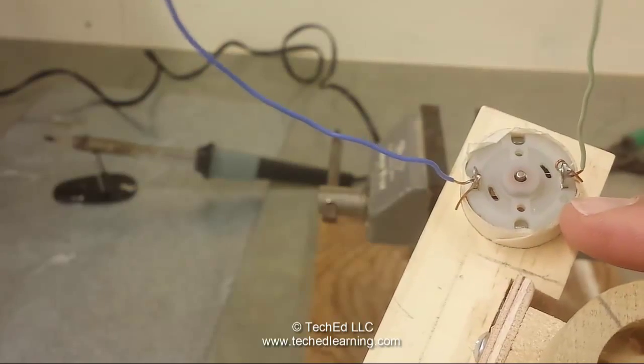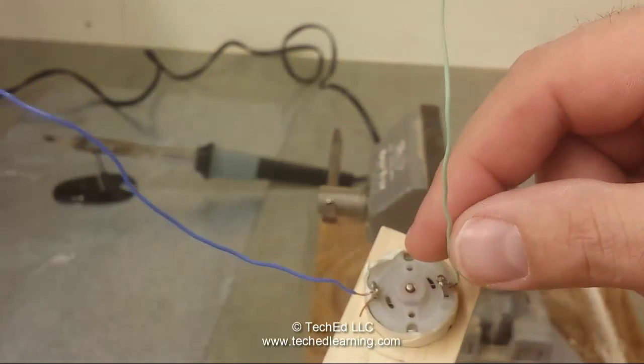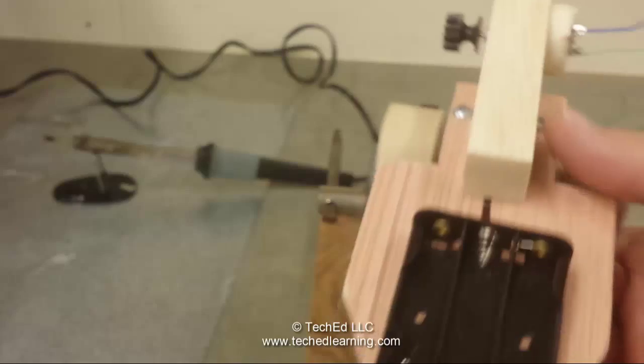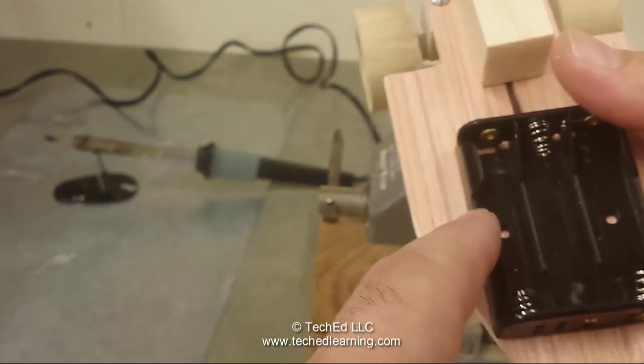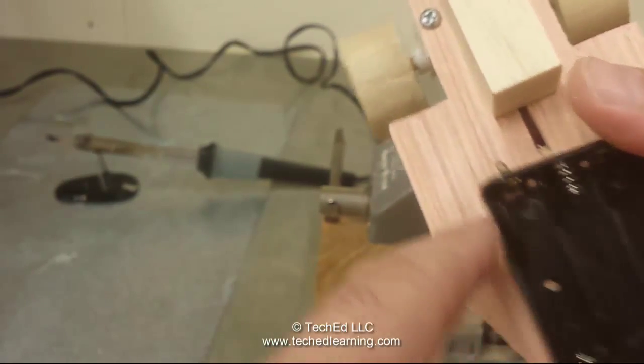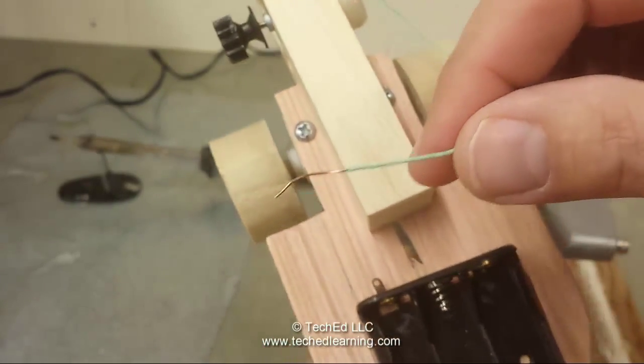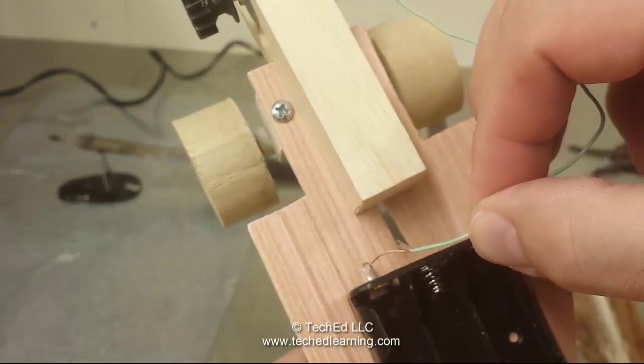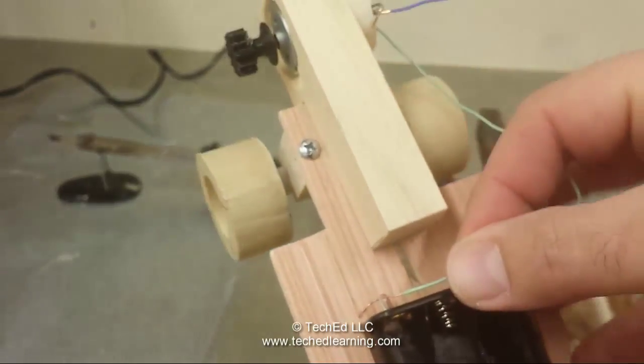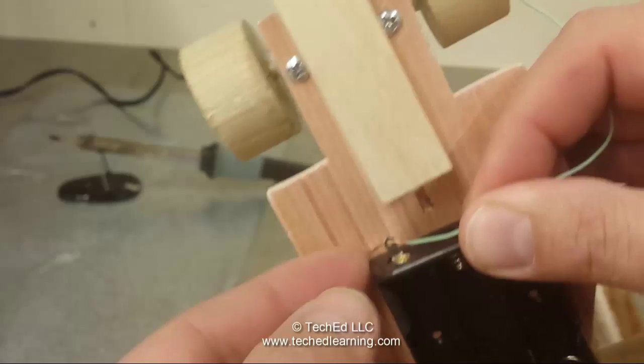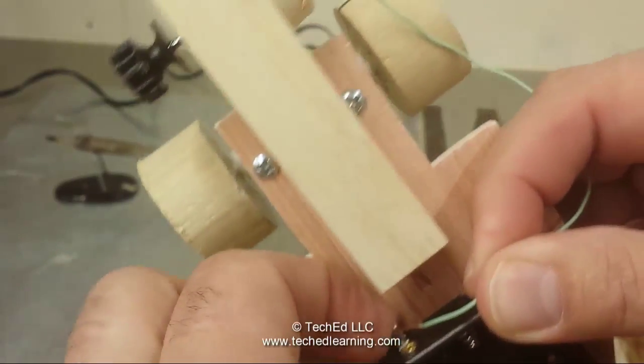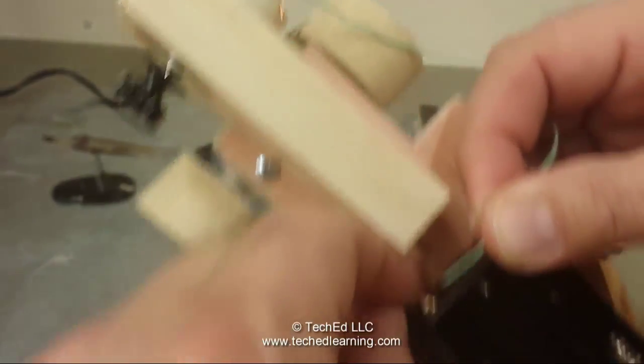You're going to take the positive terminal wire which is the green one that I have here and you're going to attach it to the positive terminal of the battery pack which would be here. So that green wire will come around. Now just like before on the motor you're going to stick the bare end of this wire through about halfway and then fold it to make a hook and it gets kind of tight in here.